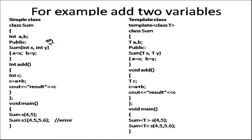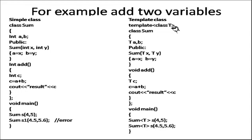Now we are switching from a simple class to a template class. The syntax is: template <class T> or <typename T>. This 'template' keyword is used here — we can use 'class' or 'typename'. T is just a holder that will be used for holding integer, float, or character type values, whatever data type we pass from the main function. Then: class Sum, with T a, b.